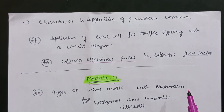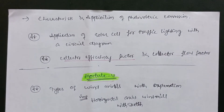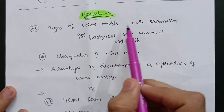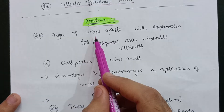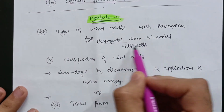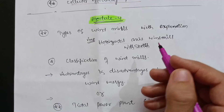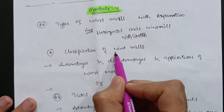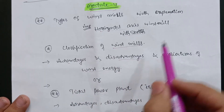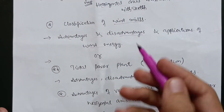As you know, the syllabus for this subject is vast, so just focus on this much content so that you can easily pass the subject. In Module 4, types of windmills with explanation — the most important part is the horizontal axis windmill. With a neat sketch they may ask you to draw the horizontal axis windmill with explanation. Classifications of windmills, advantages, disadvantages, and applications of wind energy are also important — you can easily score 20 marks in Module 4 by covering this content.